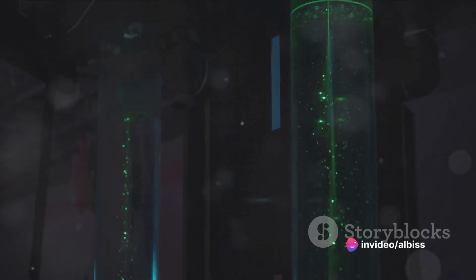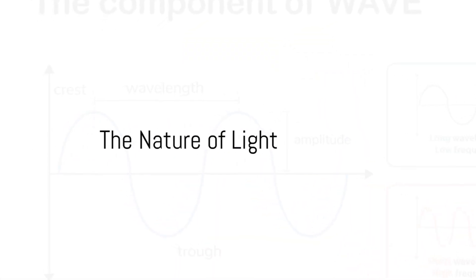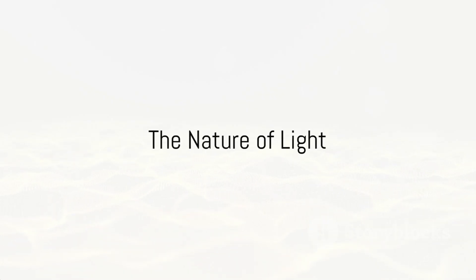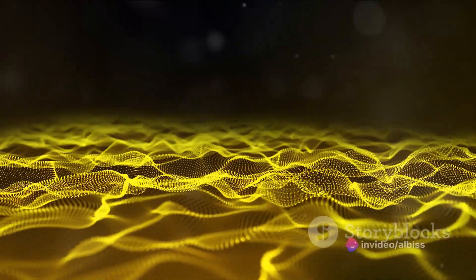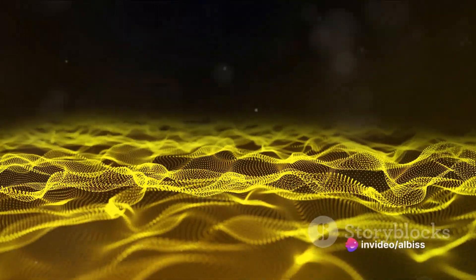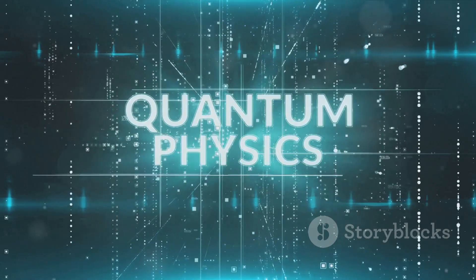Today we unravel the science behind these intriguing phenomena. First, we need to understand what light is. Light, simply put, is a form of energy, but it's not as straightforward as that. It's a fascinating blend of both waves and particles, a concept known as wave-particle duality. This concept is a cornerstone of quantum mechanics, and it's what makes light so unique.